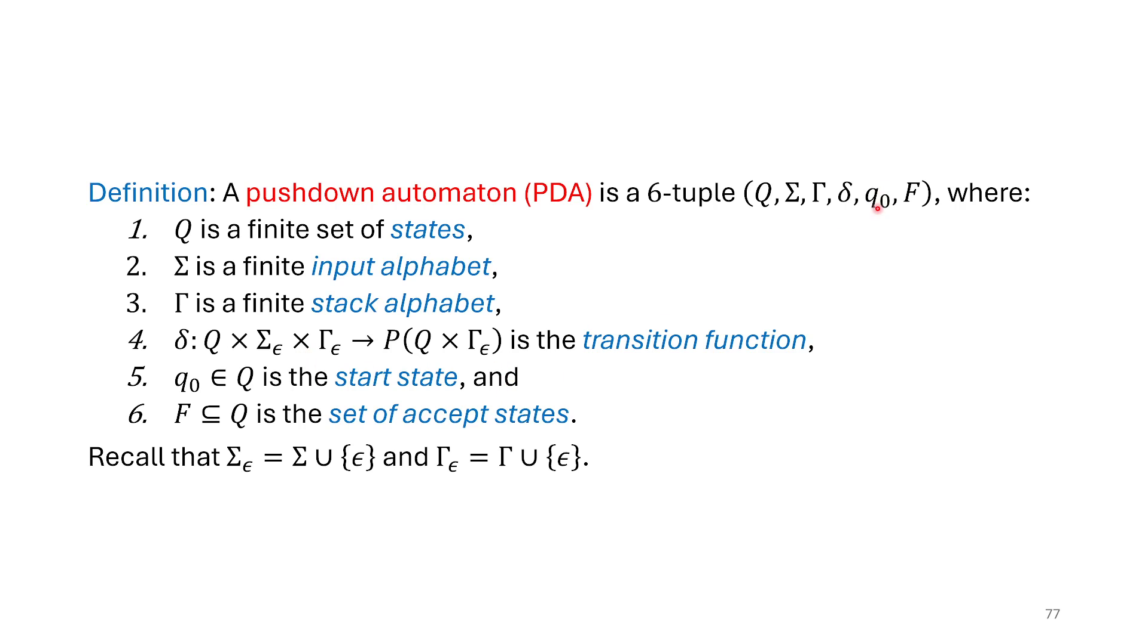And then what else do we need? It looks like the rest here, we have a Q0, that's just our start state. F, a set of accepting states, also not new. So what are the main new things here that we've added? This is basically the definition of a non-deterministic finite automata with two extra bits we've added: the stack alphabet and we've added in room for processing the stack. So a formal definition and now allowing us to maybe use this in a proof or maybe compute with it.